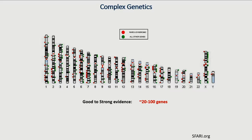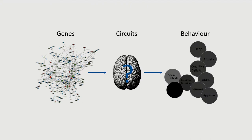Layered on top of this complex phenotype is the rather complex genetics that underlie autism — this is probably why autism presents with such a variety of phenotypes. This map from the Simons Foundation website shows all the autism risk genes that have been identified; many have good to strong evidence, and we're talking about at least 50 genes with a strong association with causing autism. One of the challenges in the field is to map that genetic complexity onto the underlying circuits that are altered to drive the changes in behavior.